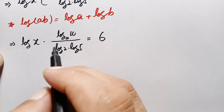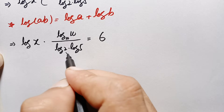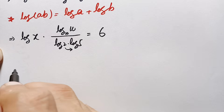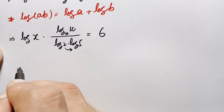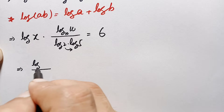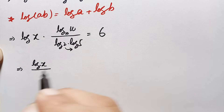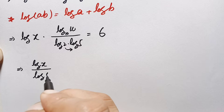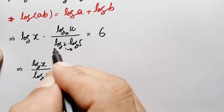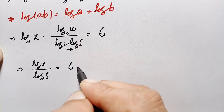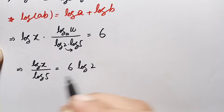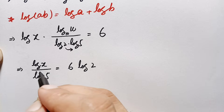We move log of 2 to the right hand side where it multiplies 6, so this equation becomes: log of x divided by log of 5 is equal to 6 times log of 2.